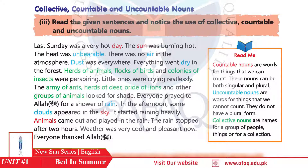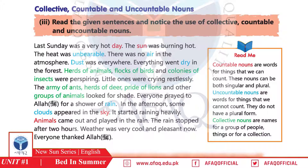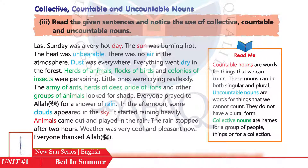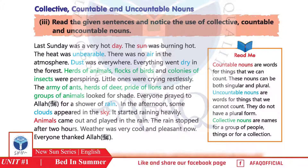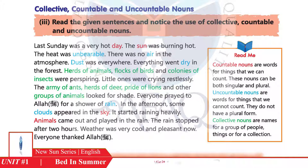'Herds of animals, flocks of birds and colonies of insects were perspiring.' These three — herds of animals, flocks of birds, colonies of insects — yeh collective nouns hain. 'Little ones were crying restlessly. The army of ants, herds of deer, prides of lions and other groups of animals looked for shade.' Army of ants, groups of animals — these are collective nouns.